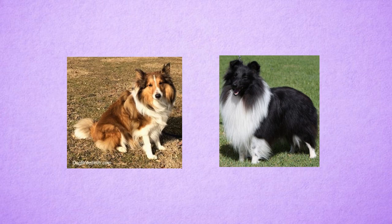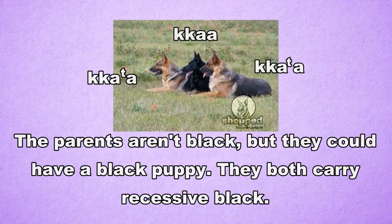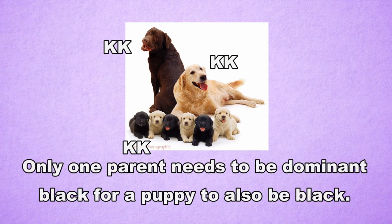Lastly, we have recessive black, which is rare and only occurs in herding breeds like the German Shepherd, Shetland Sheepdog, Schipperke, and Puli, and looks identical to dominant black. So how can you tell the difference between a dominant black and a recessive black, other than the breed? You can find out from breeding. A solid black puppy could only be born from two parents who are non-solid black if they carry a copy of the recessive black gene, whereas a dominant black puppy can only be born if one or both of its parents are also dominant black.